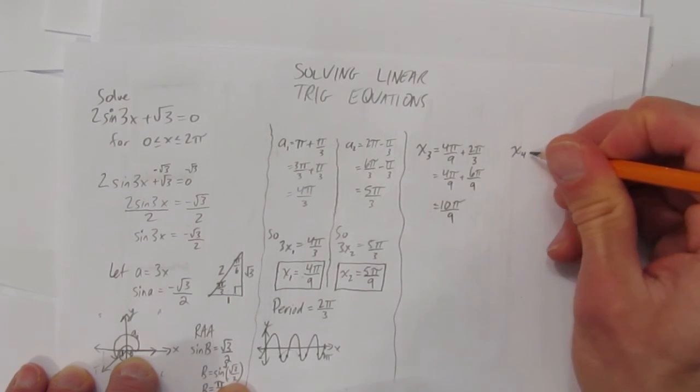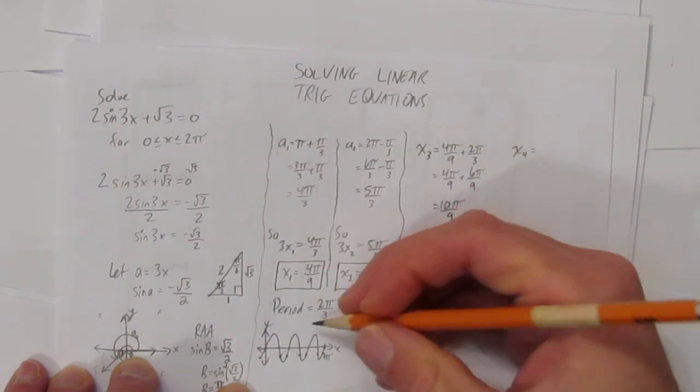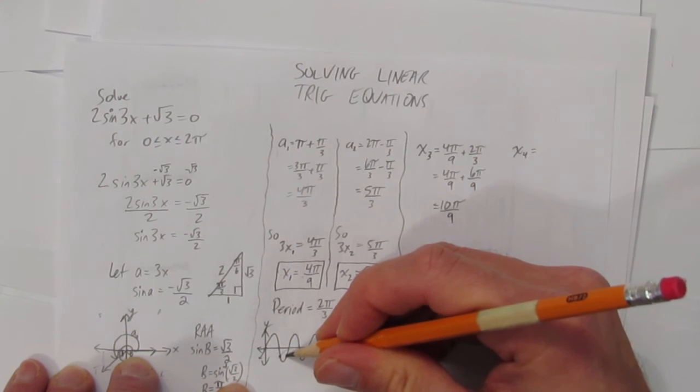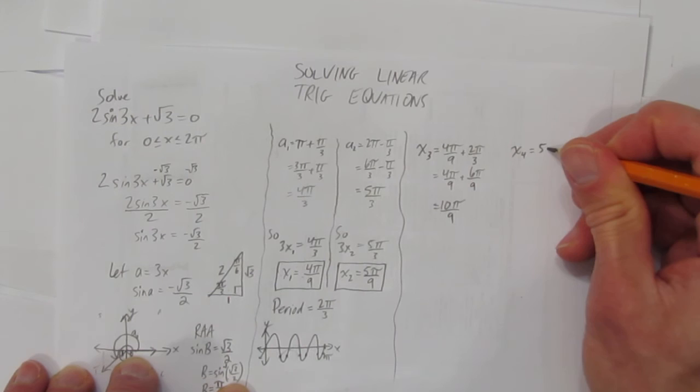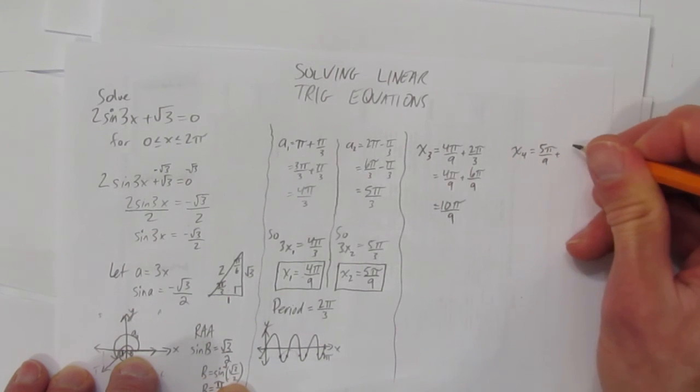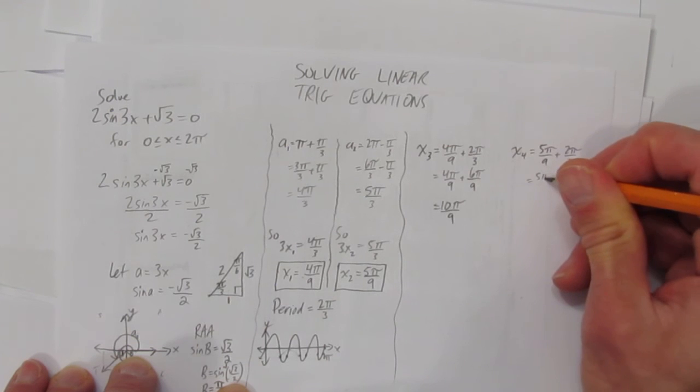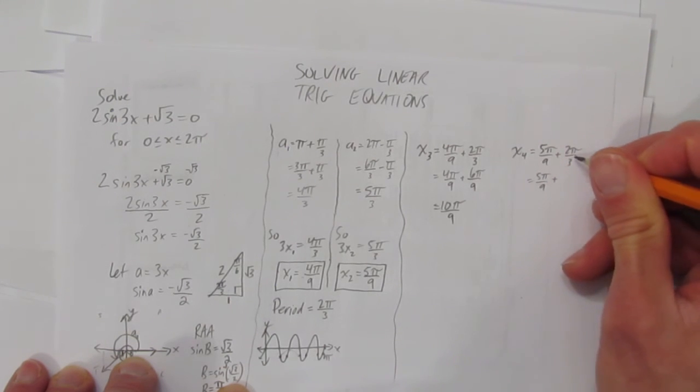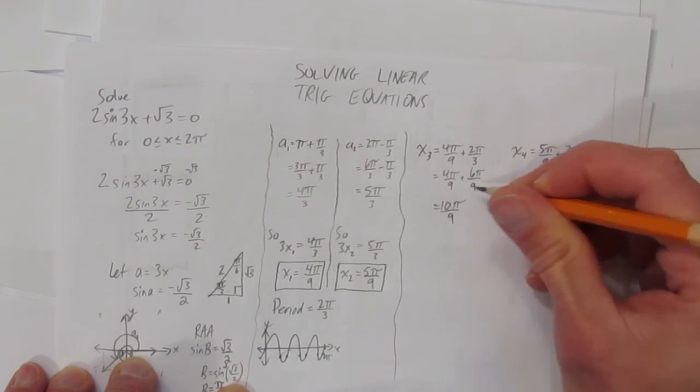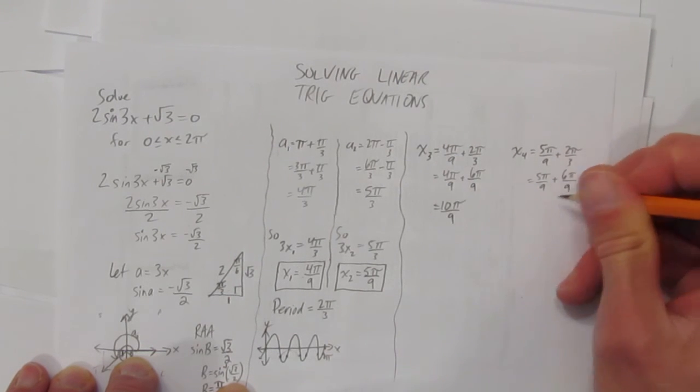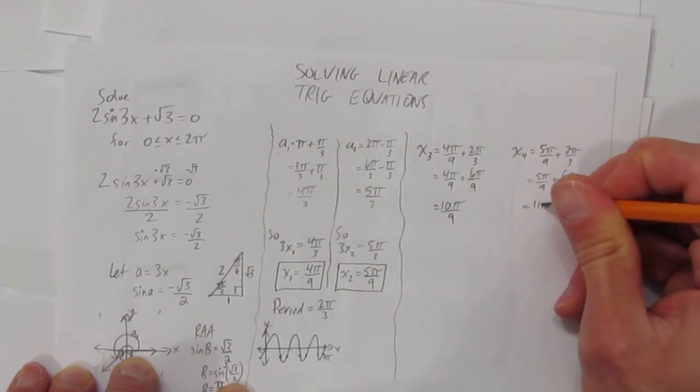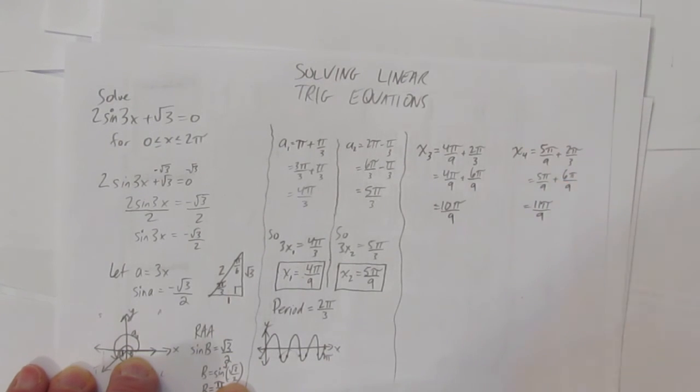Same thing for x4. x4 is going to start at x2, this one, and occur exactly one period ahead. That means it'll be 5π/9 plus 2π/3, so that'll be at 5π/9 plus, again, convert this to base 9. You already know how to do that because you did it right here. It's 6π/9. So there's going to be another case where you're correct at 11π/9.